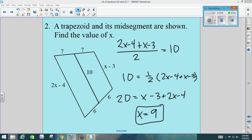Sum of the bases divided by 2 equals the mid-segment. Questions? Cool. We're done.